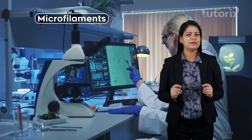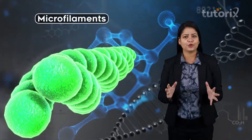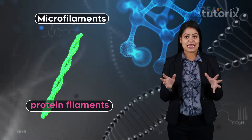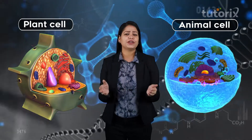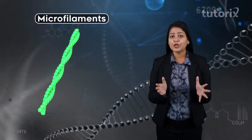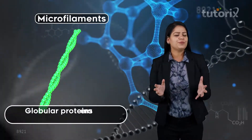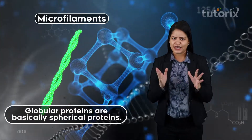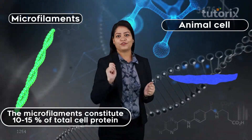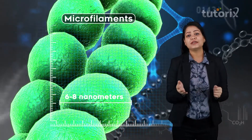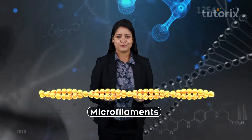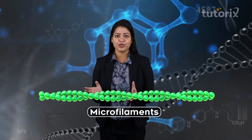The microfilaments are ultramicroscopic, long, narrow, and cylindrical rods that are made up of proteins, so we can also call them protein filaments. These protein filaments are found in all eukaryotic cells — all plant cells and all animal cells. They are made up of a globular protein called actin. These microfilaments constitute 10 to 15 percent of the total protein content of a cell and are about 6 to 8 nanometers in thickness. They exhibit a periodic beaded arrangement due to the helical arrangements of their monomers, the protein actin.